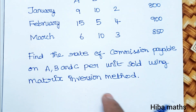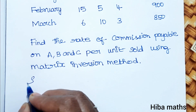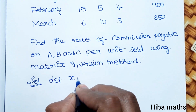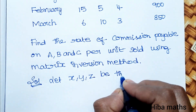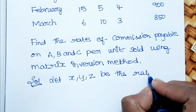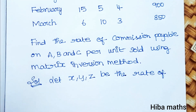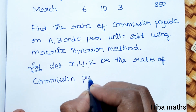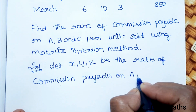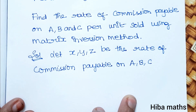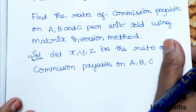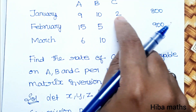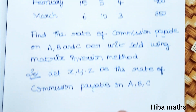You can use the matrix inversion method. We use the matrix inversion method. Let x, y, z be the rate of commission. We set up the matrix equations.